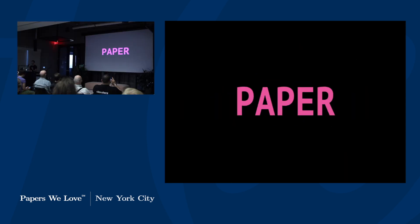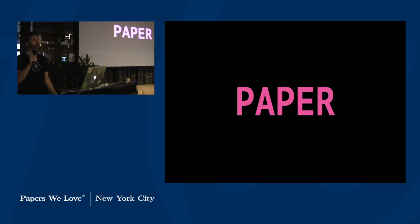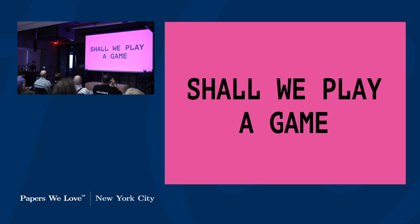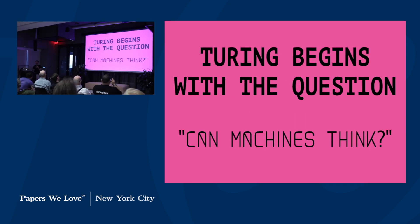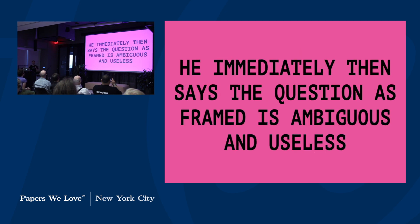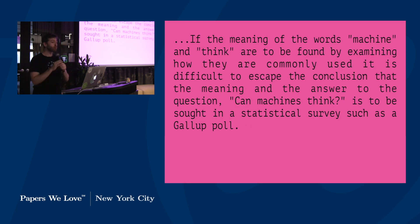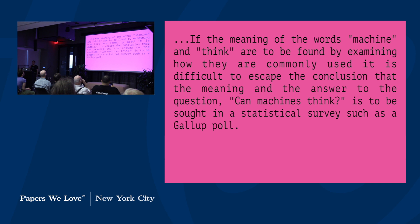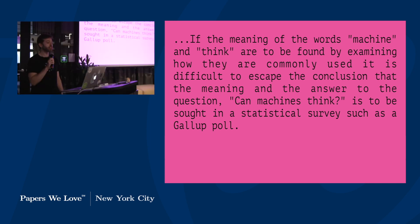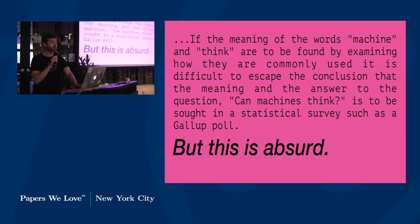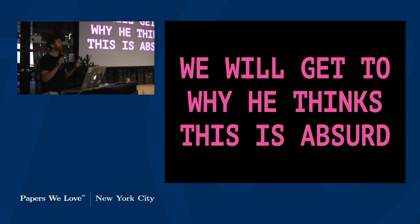Turing begins with the question: can machines think? He then immediately says this question, as stated, is ambiguous and useless. If the meaning of the words 'machine' and 'think' are to be found by examining how they are commonly used, it is difficult to escape the conclusion that the answer is to be sought in a statistical survey such as a Gallup poll. But this is absurd.